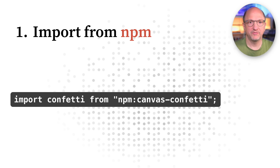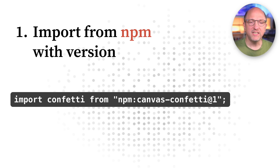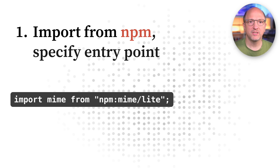Perhaps the most common type of import is to load modules from npm. In Framework, you do this by using the npm protocol, which looks like this. In addition to the module name, you can also specify the version. You can also pick a particular entry point, like this. If you don't, the default export defined by the module is used.